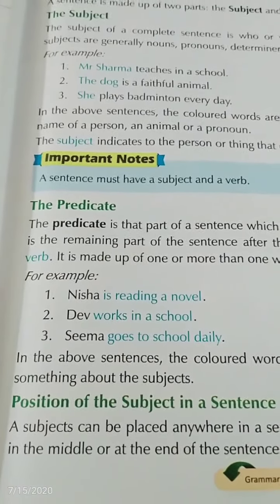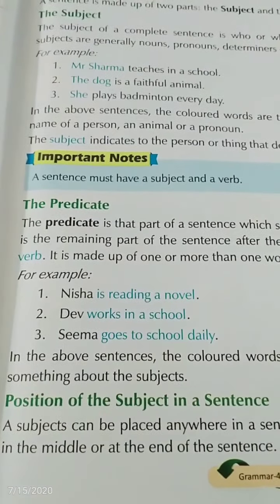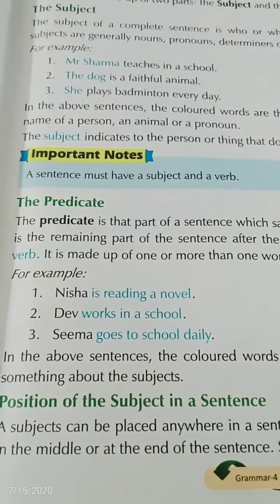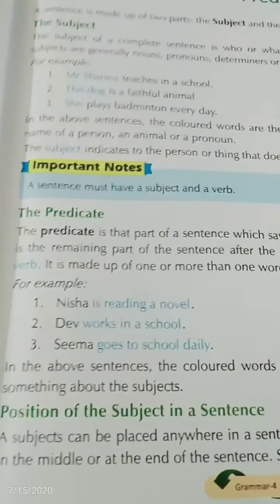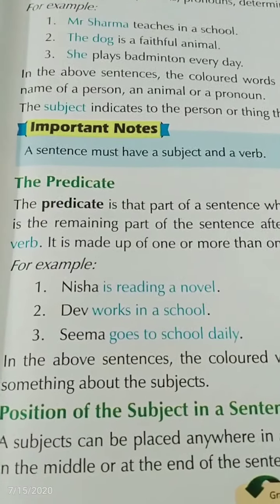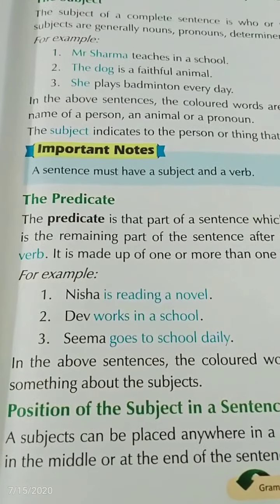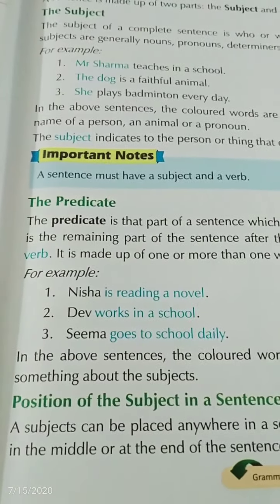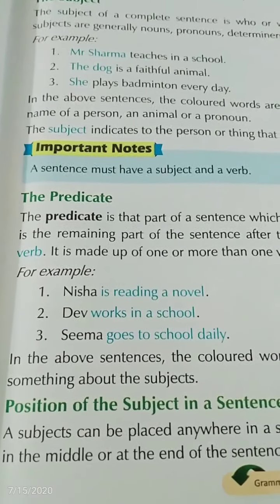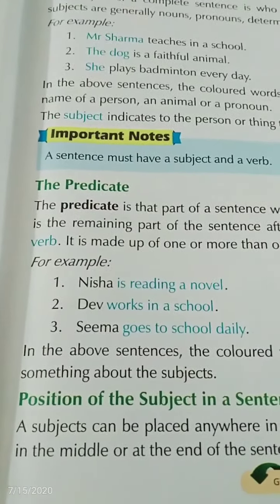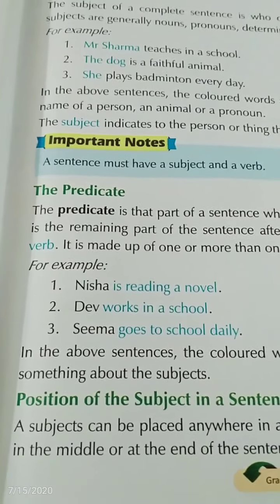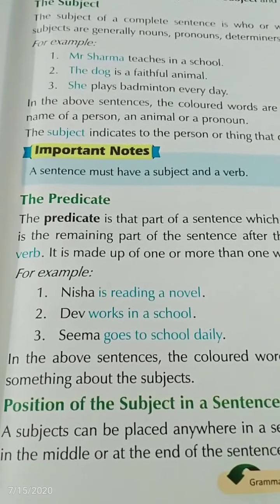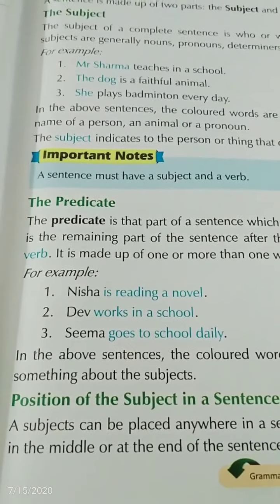Now see the examples. Nisha is reading a novel. They work in a school. Sima goes to school daily. As you know, Nisha is the subject and 'reading a novel' is the predicate — it tells about the action of Nisha, what Nisha is doing.